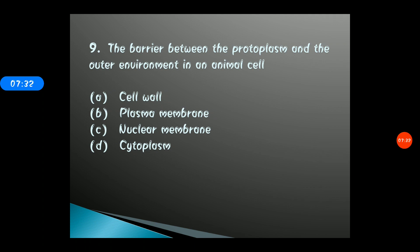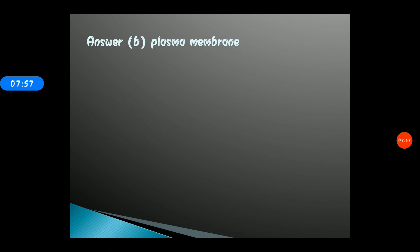Question 9: The barrier between the protoplasm and the outer environment in an animal cell is — options: A) Cell wall, B) Plasma membrane, C) Nuclear membrane, D) Cytoplasm. The correct answer is option B, plasma membrane. Animal cells do not contain a cell wall — that is a prominent feature of plant cells. Therefore, the plasma membrane serves as the barrier in animal cells.